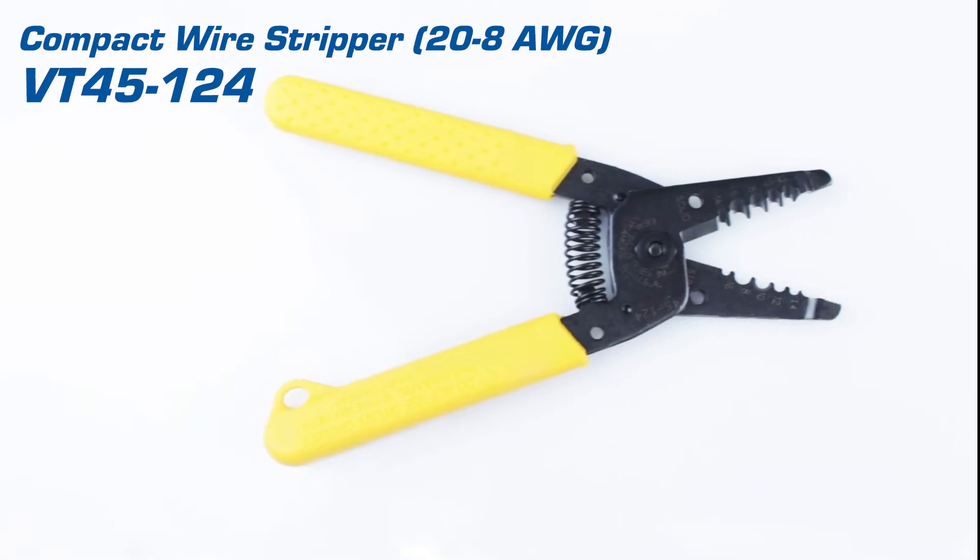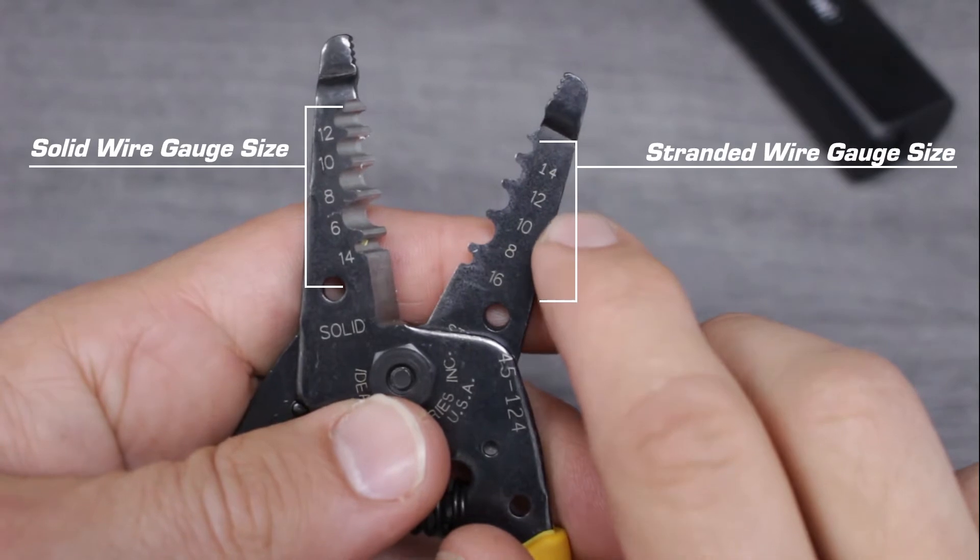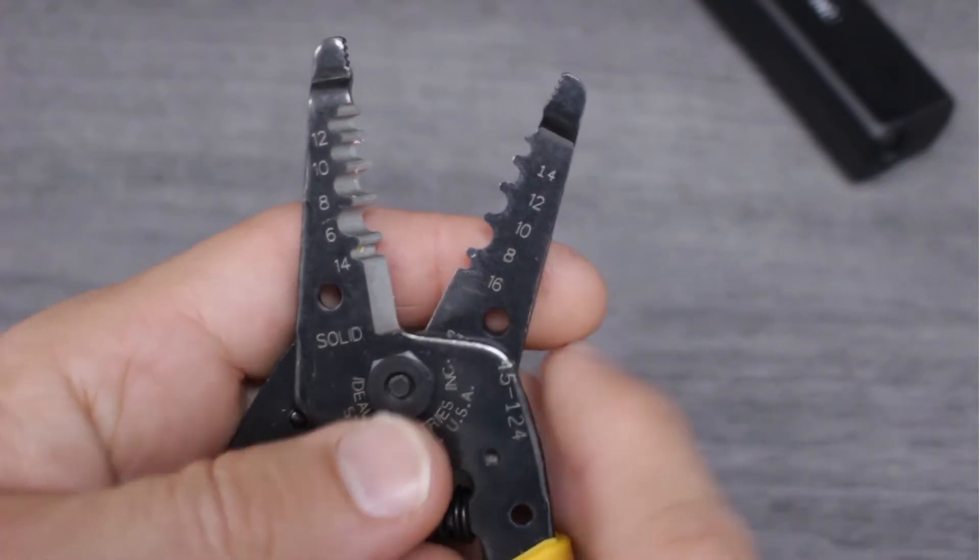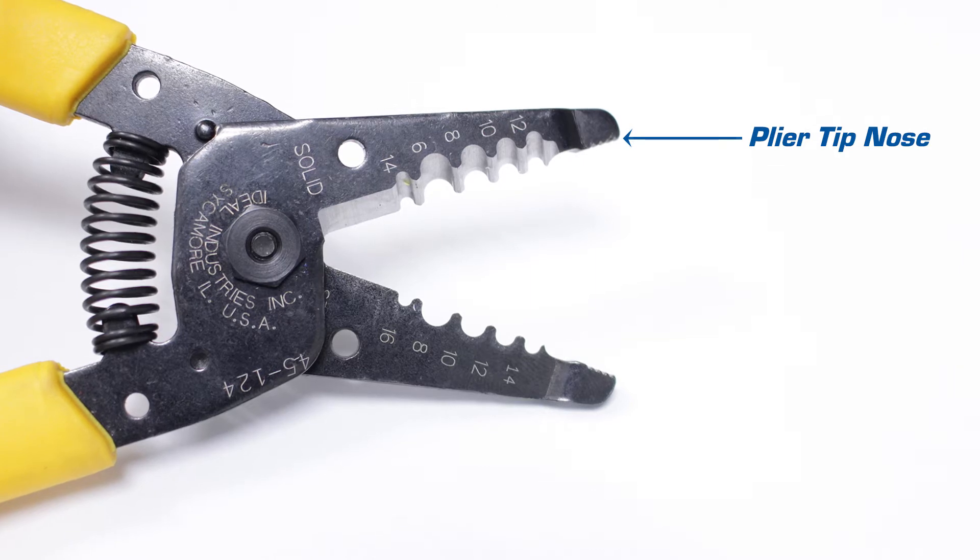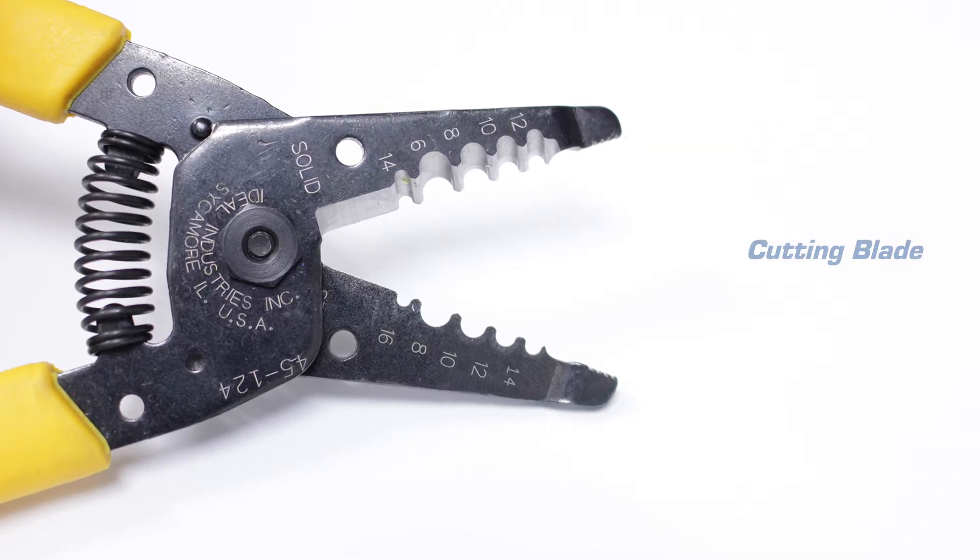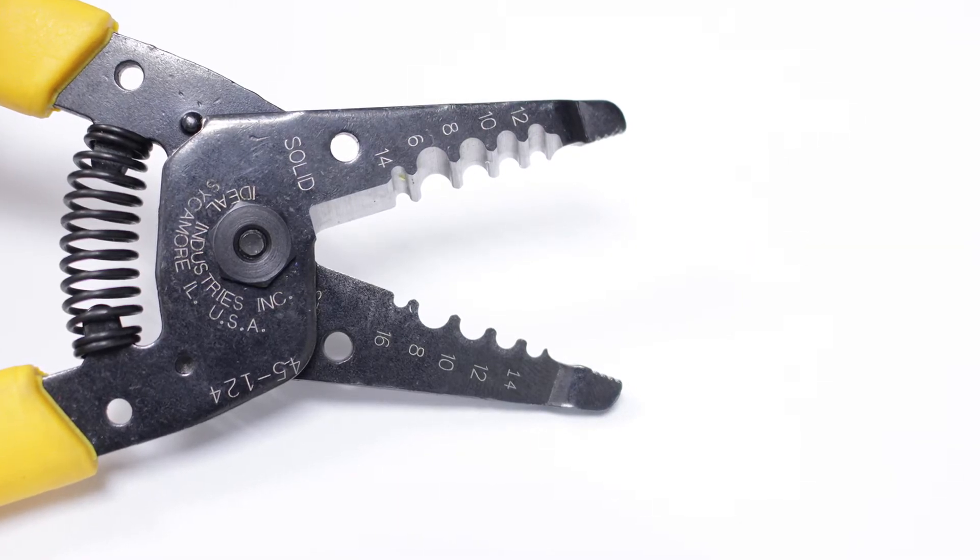Our compact wire stripper is built for longevity. It offers multiple cut nests to handle a wide range of wire sizes. It also has a tapered plier nose that can be used to bend, twist, grab, or pull. Lastly, this tool offers a sharp cutting blade ideal for cutting solid and stranded wires as large as 10 gauge.